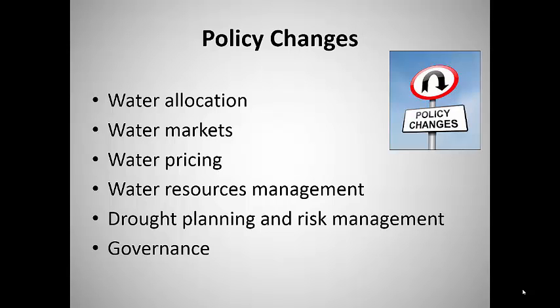Water pricing schemes can also contribute to scarcity for low-income people by failing to provide a minimal allocation of water to meet basic human needs at an affordable price. Government policies on water resources management may fail to provide for basic infrastructure to obtain, treat, and transport water to the people who need it, may fail to leave sufficient water in the rivers and lakes to support aquatic life, and may fail to adequately prepare for droughts. Moving toward effective governance and policy based on democratic principles and a realistic understanding of water supplies and needs can go a long way toward correcting these problems and making water available to those people and ecosystems that need it.